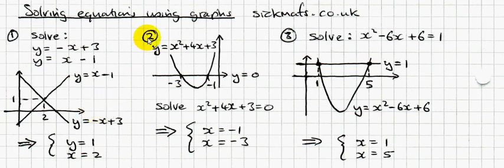Example number 2. You've got two graphs: y equals x squared plus 4x plus 3 and y equals 0, which is just the x-axis. It says solve x squared plus 4x plus 3 equals 0. Going back to this idea, it means you have to solve these two simultaneous equations. How do you solve this kind of simultaneous equations when you've got a quadratic?